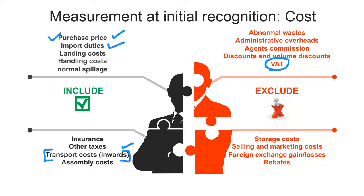When we spoke about purchase costs, we said we're not going to include administrative overheads. However, if we add the word 'factory' — factory overheads — then those would be considered manufacturing overheads and would be included. We won't add administrative overheads relating to the finance department, HR department, and so on. But costs relating to the factory and factory administration or manufacturing would be included. We also exclude discounts, volume rebates, and forex gains and losses.